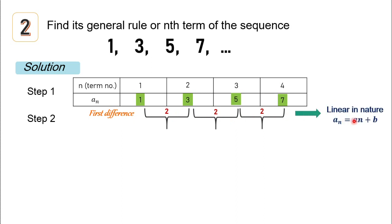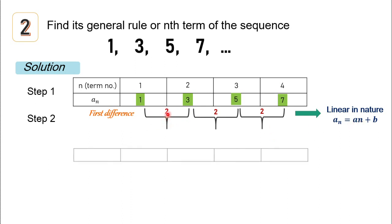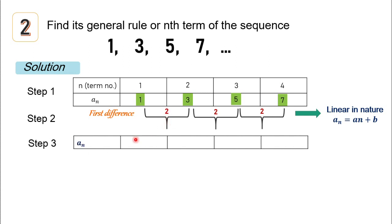Since they have a common difference, this is a sequence that is linear in nature, and the nth term can be expressed as a-sub-n equals an plus b. Now we're going to find the values of a and b. Since n is 1, 2, 3, and 4, and the common difference is 2, we can assume the value of a is 2. For step three, applying trial and error, we multiply 2 by the term number: 2 times 1 gives 2, but the first term is 1, so we subtract 1, giving 2 times 1 minus 1 equals 1.